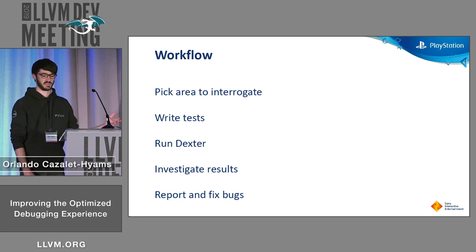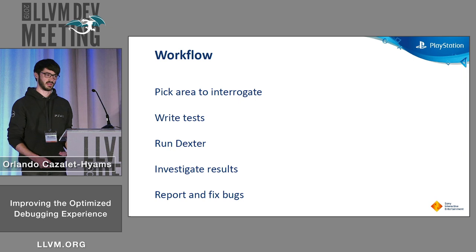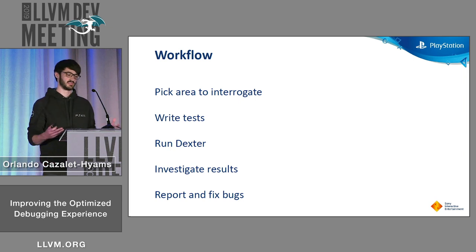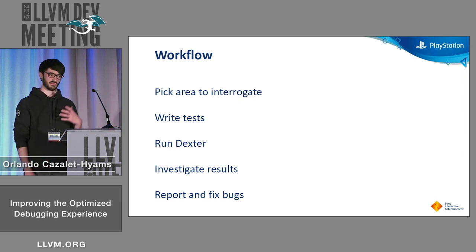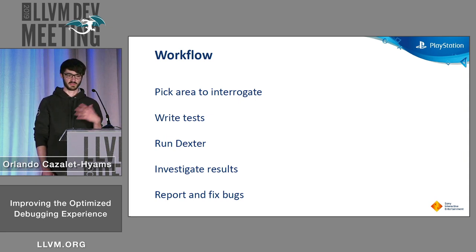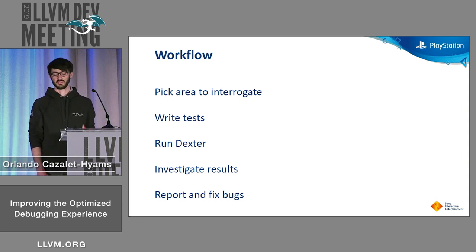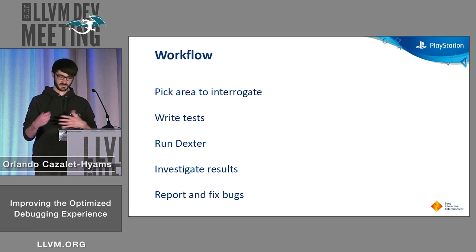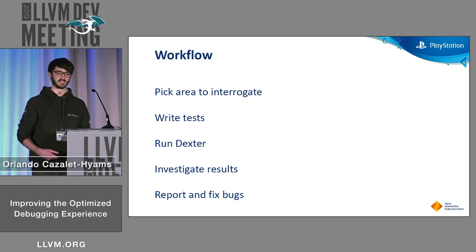Our workflow when using Dexter looks something like this. We pick an area to interrogate — generally a particular optimization pass in Clang. We write Dexter tests that we think will stimulate this part of the compiler. We then run the Dexter tests, investigate the results, tweak the tests, keep repeating this until we find interesting behavior, and then report bugs and hopefully fix them.